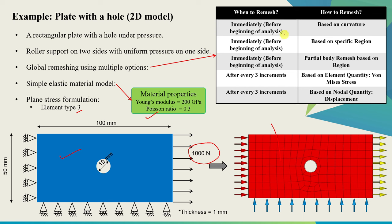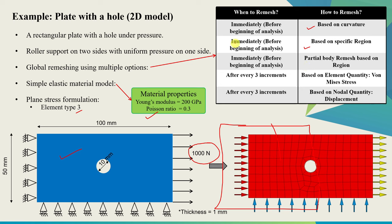Those options are given over here — we'll try five different scenarios. In the first scenario, we will remesh based on curvature, so wherever there is a curve we will use finer elements, and we should expect finer mesh near the hole. In the second scenario, we specify some region where we want finer mesh — maybe a rectangle covering half the plate. Then next is partial body remesh, where you don't have to remesh the whole body but only part of it. For the first three scenarios we will do remeshing once at the beginning of analysis. For the last two scenarios, we will keep remeshing after every three increments — the fourth based on von Mises stress and the fifth based on displacement.